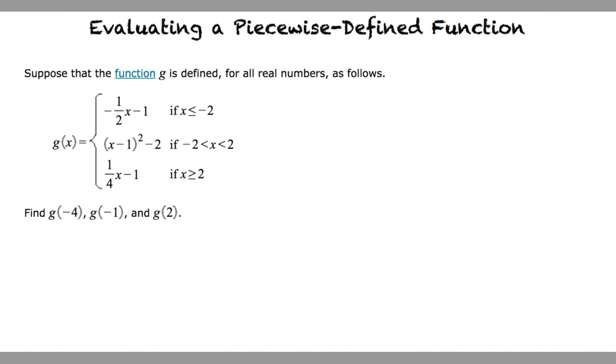Find g of negative 4, g of negative 1, and g of 2. We can see here that there are three parts.